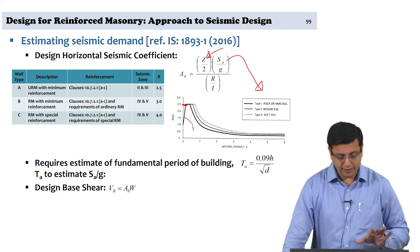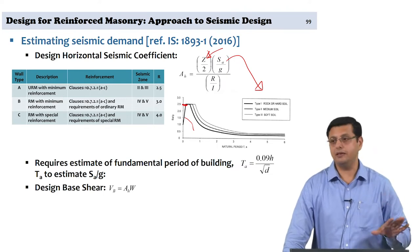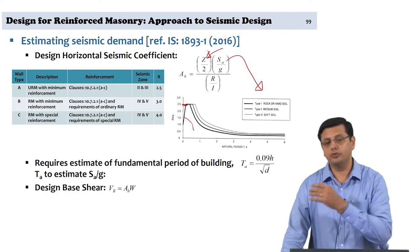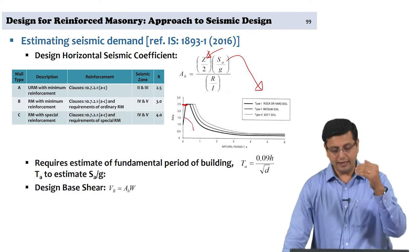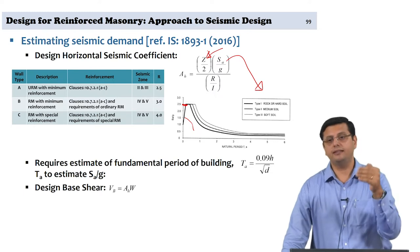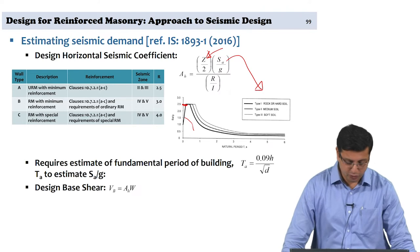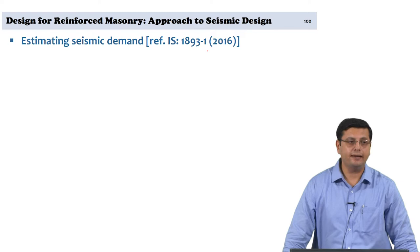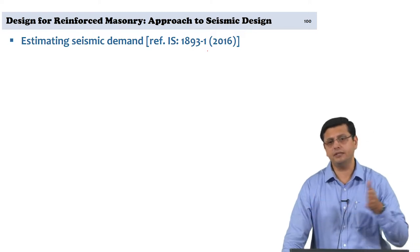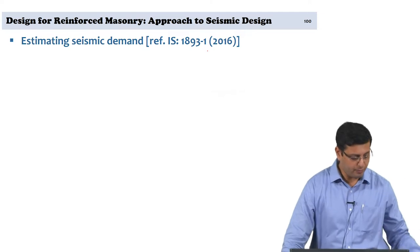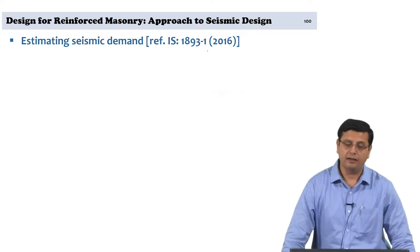Once the design base shear VB is estimated, we move to the next phase: taking it to different floors and then to the different walls and piers to establish the shear force for which each pier should be designed. Today we look at this transition from total base shear to the base shear estimated for each pier.